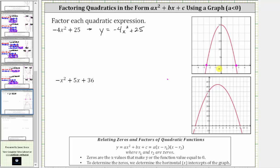Negative 2.5 is negative two and a half, or negative five halves — let's use the improper fraction negative five halves, and then comma zero. The ordered pair for this point on the right is 2.5 comma zero, but let's use five halves comma zero.